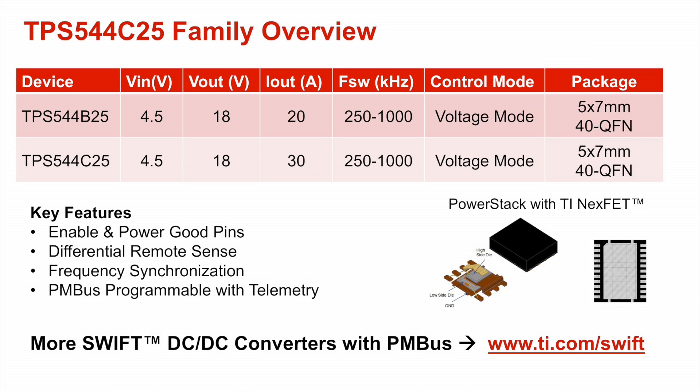To help power these high-performance processors, TI developed the TPS544C25 family of SWIFT DC-DC converters with PMBUS, which integrate low-resistance MOSFETs to deliver up to 30 amps in a small 5x7mm QFN package.